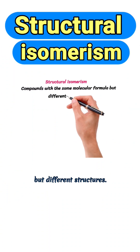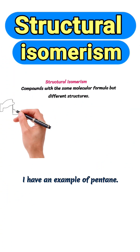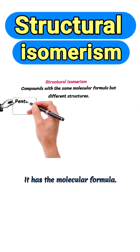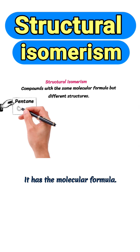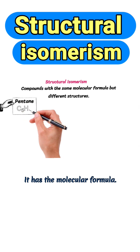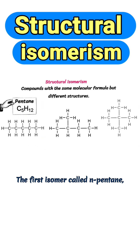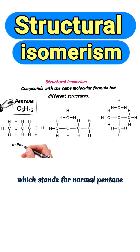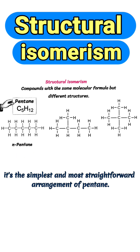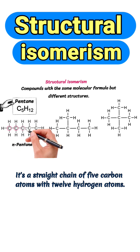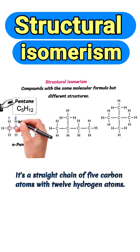...formula but different structures. I have an example of pentane. It has the molecular formula C5H12. The first isomer, called N-pentane, which stands for normal pentane, is the simplest and most straightforward arrangement of pentane. It's a straight chain of 5 carbon atoms with 12 hydrogen atoms.